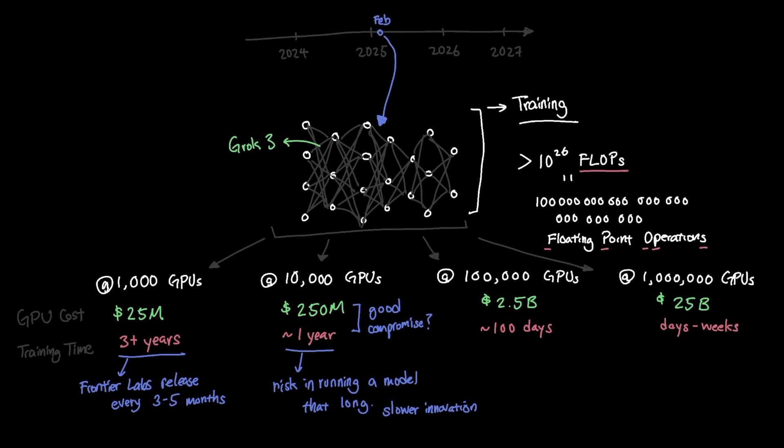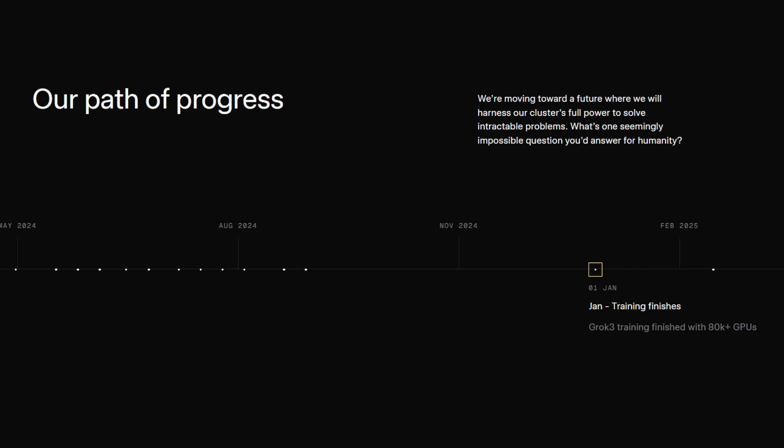So now we're at 100,000 GPUs, which is where the Colossus facility initially started. The GPU cost is now at $2.5 billion, and the training time for Grok 3 is now closer to around 100 days, which is roughly the same timeline that xAI shared on their website for Grok 3.